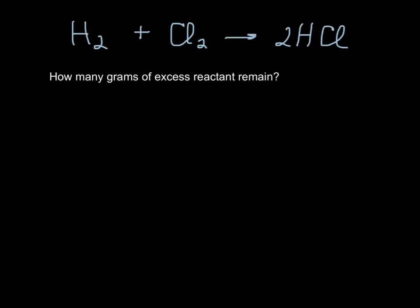But now we're going to say, how many grams of excess reactant remain? So what was our limiting reactant? Well, our limiting reactant was the H2. So we're going to try to figure out how much Cl2 is left over. What I'm going to do is I'm going to start with the amount of H2 I was given. I started with 5 grams of H2. And what I'm going to do is I'm going to do some stoichiometry and figure out how much chlorine I used.